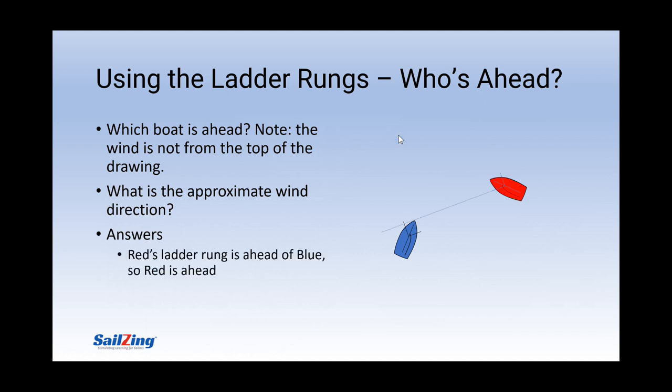To find out who's ahead, we simply extend the ladder rung line from either the red boat or the blue boat. The ladder rung line from the red boat is ahead of the blue boat, so red is ahead. To find out the wind direction, we look at the windward 45 degree line on both boats, which both point in the direction of the wind. So the wind is from the upper left.